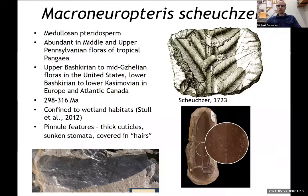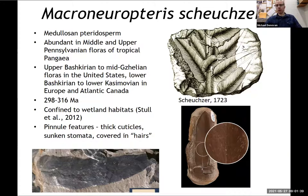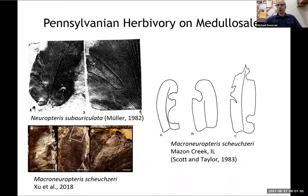I'm going to be talking about Macroneuropterus scheuchzeri, which is a common medullosanaturidisperm found in middle and upper Pennsylvanian forests in tropical Pangea — from the Bashkirian to mid-Kasimovian in the US, and lower Bashkirian to lower Kasimovian in Europe and Atlantic Canada. It's around for about 18 million years and confined to wetland habitats. It features characteristics typical of plants associated with dry environments like thick cuticles, but it's associated with wetland habitats. There has been a lot of herbivory previously documented on the medullosans, mostly margin feeding where an insect chewed along the edge of the leaf.